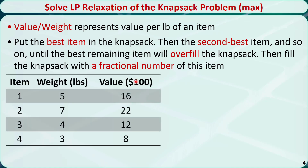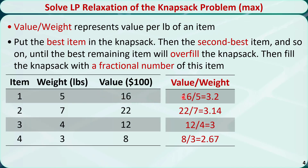Let's calculate the value-weight ratio for this knapsack problem. The ratio for the first item is 3.2. For the second item, it's 3.14. For the third, it's 3. And for the last, it's 2.67.